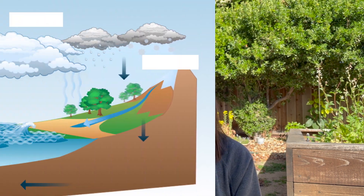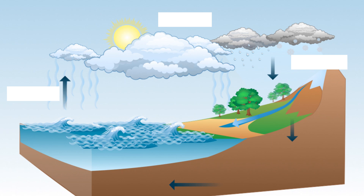Hi Sprout Up scientists and welcome back to our third and final video. Let's do a quick recap on what we've learned so far. Can you tell me the three parts of a water cycle? That's right — we have evaporation, condensation, and precipitation.